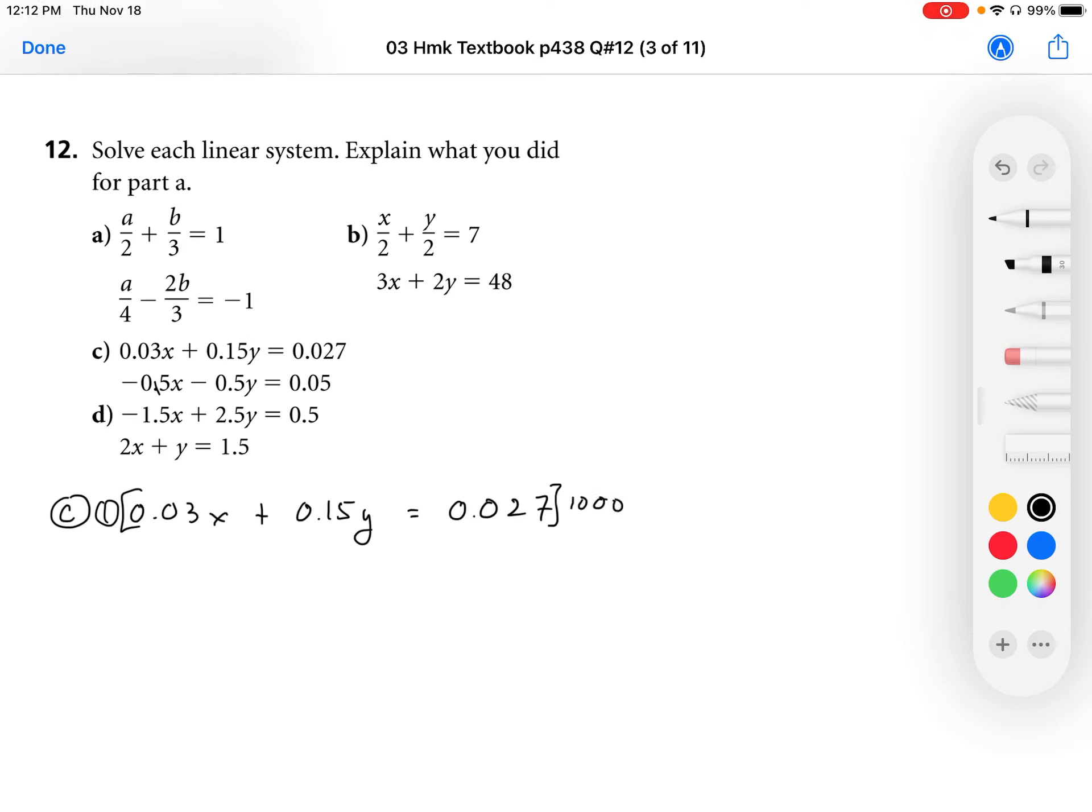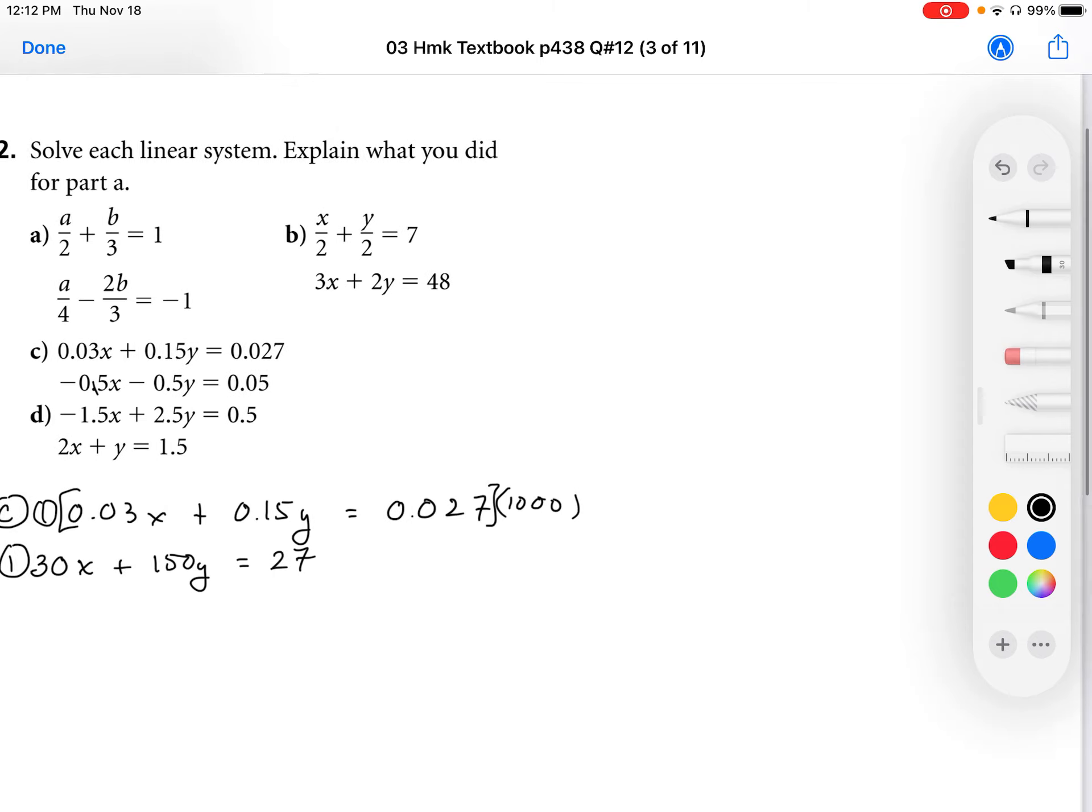So we're going to multiply by 1,000. When I multiply by 1,000, I'm going to move that decimal point over three spaces. So I get 30x plus 150y, and that's equal to 27. That represents the whole number coefficients of that first equation.